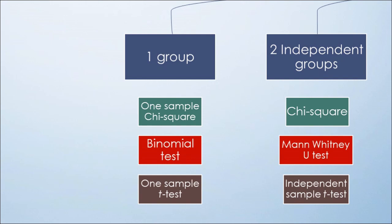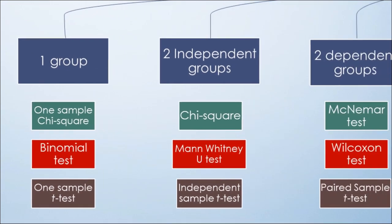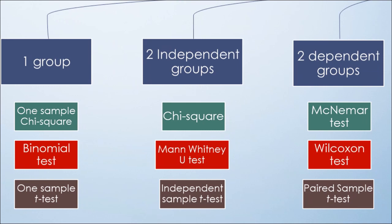With two independent groups, we use chi-square test for categorical data, Mann-Whitney U test for non-parametric, and independent sample t-test for parametric data.